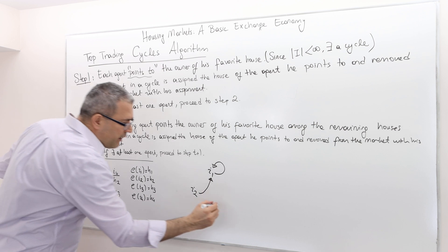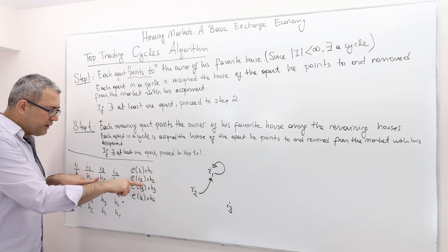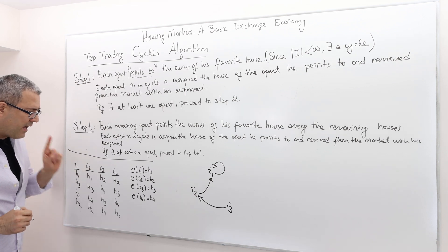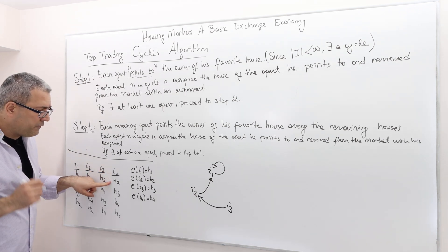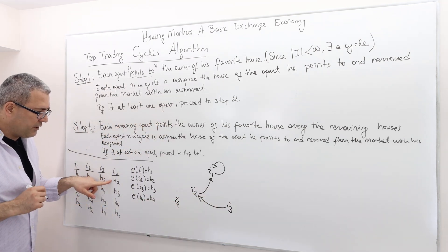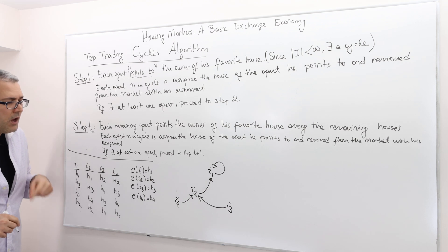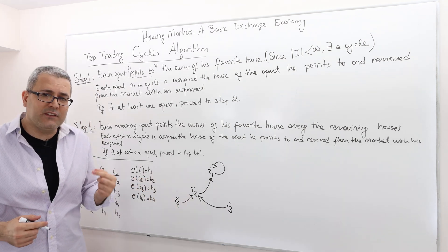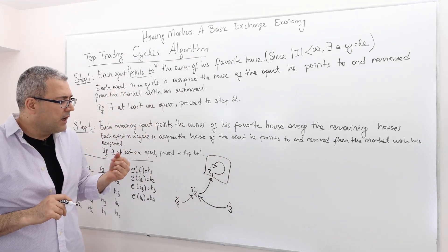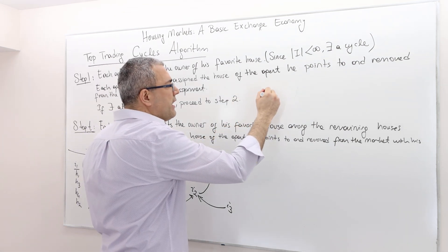Finally, agent four's favorite house is house two, which belongs to agent two. So agent four also points to agent two. Do we have any cycle? Yes — there is only one cycle, and that is agent one pointing to himself. So I can only take out agent one.